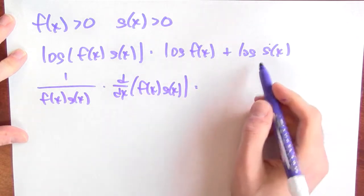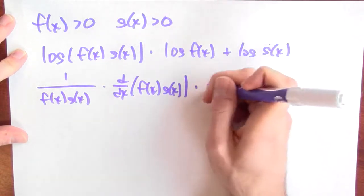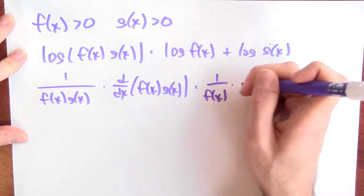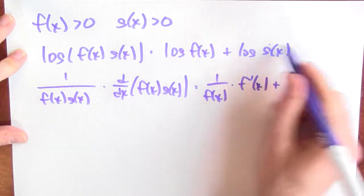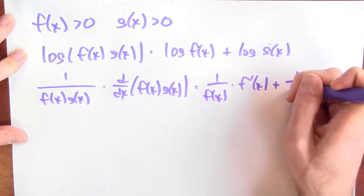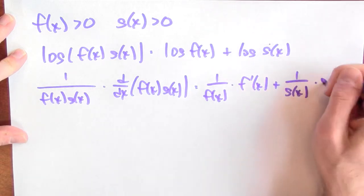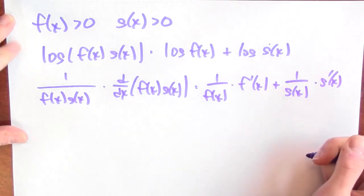What's the derivative of the other side? Well, the derivative of log is 1 over. So 1 over the inside function times the derivative of the inside function plus log of g of x is 1 over the inside function times the derivative of the inside function.